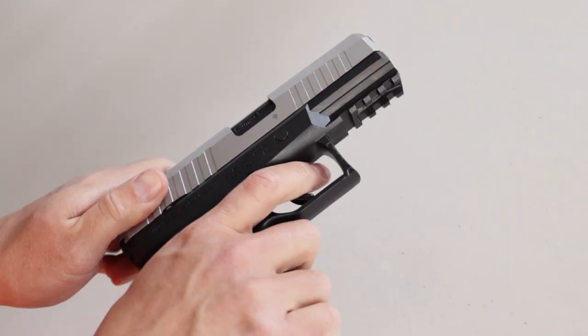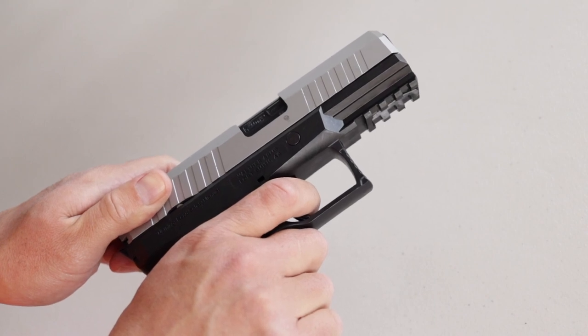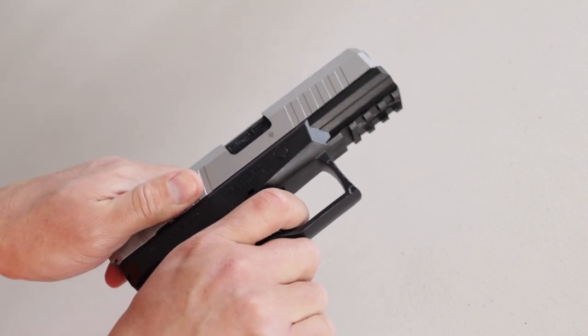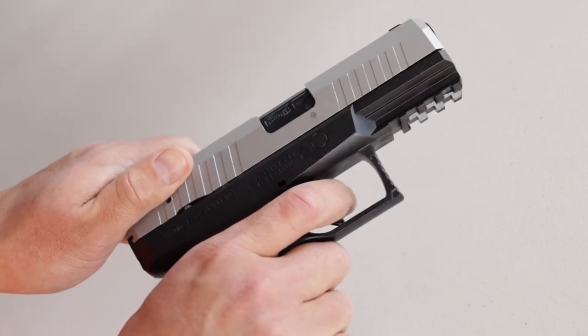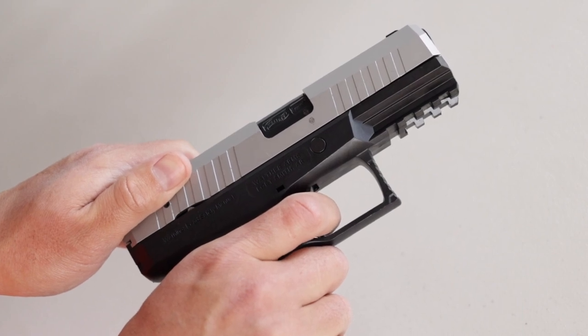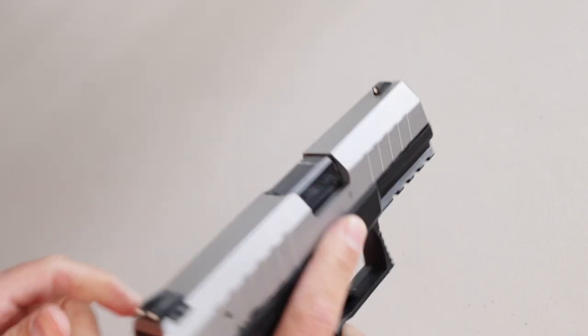Let's do a function check. Pull the trigger. You'll feel and hear it click, but don't let it go. Work the slide. Release the trigger. You'll hear it click. Pull it again. The hammer drops. You're good to go.